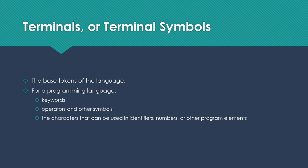The other thing we need to understand is what terminals or terminal symbols are in a language. These are the base tokens of the language. For a programming language, that might be keywords, operators, and other symbols. So plus, minus, your asterisk for times, parentheses, curly braces, and so on. And then the characters that can be used in identifiers, in numbers, or other program elements. These are the things that make up the actual program we're going to read.